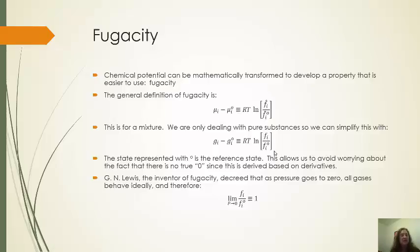Now, the guy who invented this, his name was Dr. Lewis, G.N. Lewis. He decreed that what happens is when the pressure goes to zero, every gas behaves ideally, and so therefore, the fugacity of the substance compared to its reference fugacity, as the pressure goes to zero, will always be one. So that gives us one kind of fixed value that we can use.